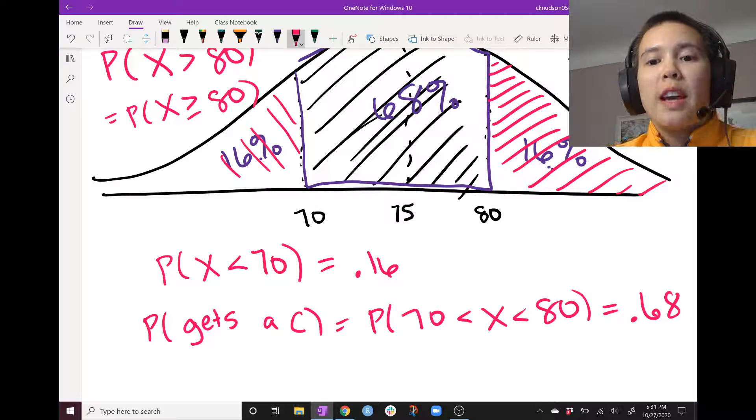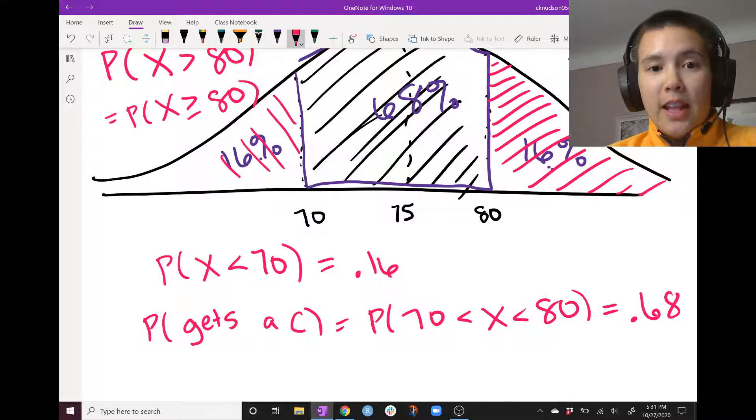So we can find probabilities using this 68, 95, 99.7% rule. Okay, let's do another example. We'll say that the professor says anyone who earns a 70 or higher gets a lollipop.